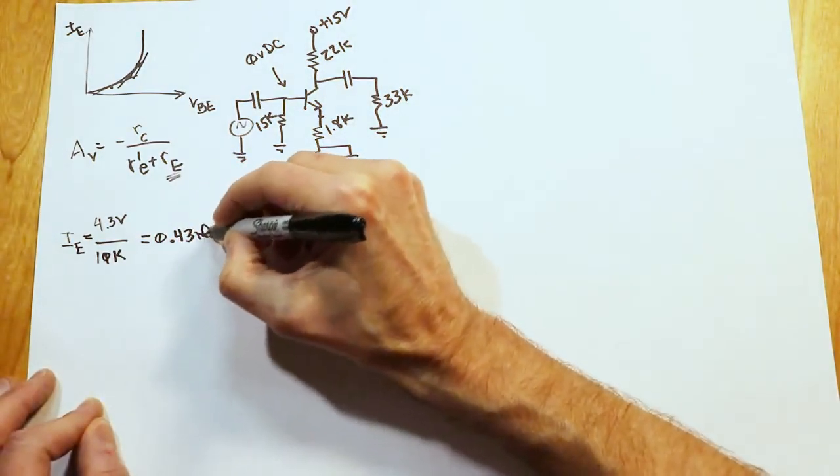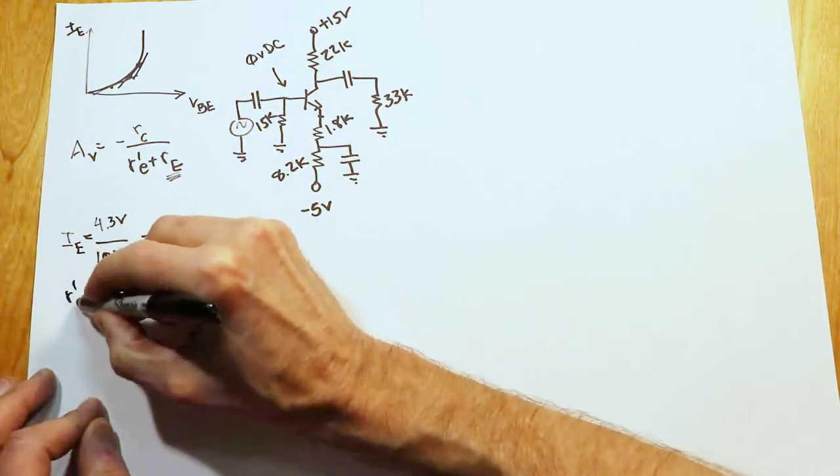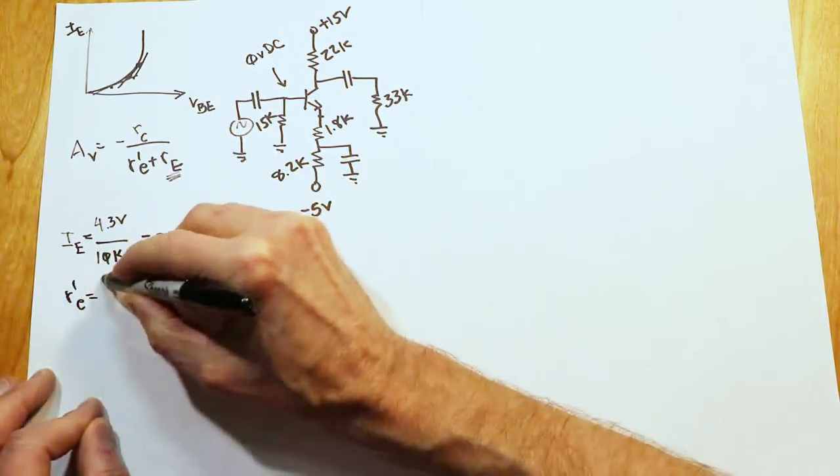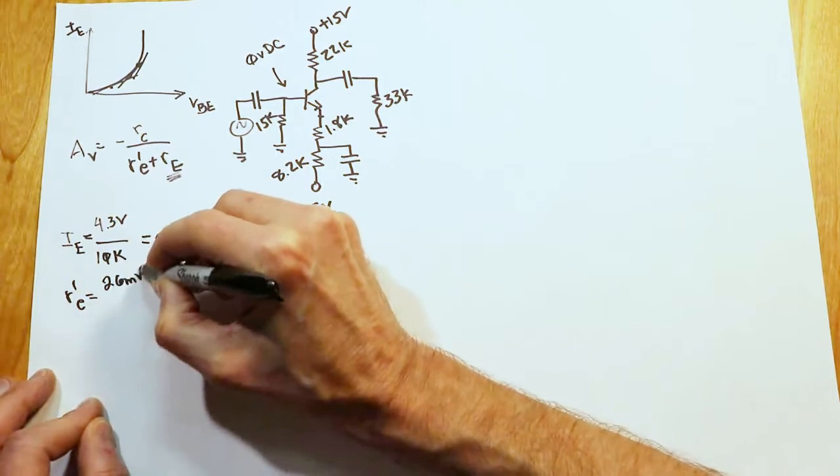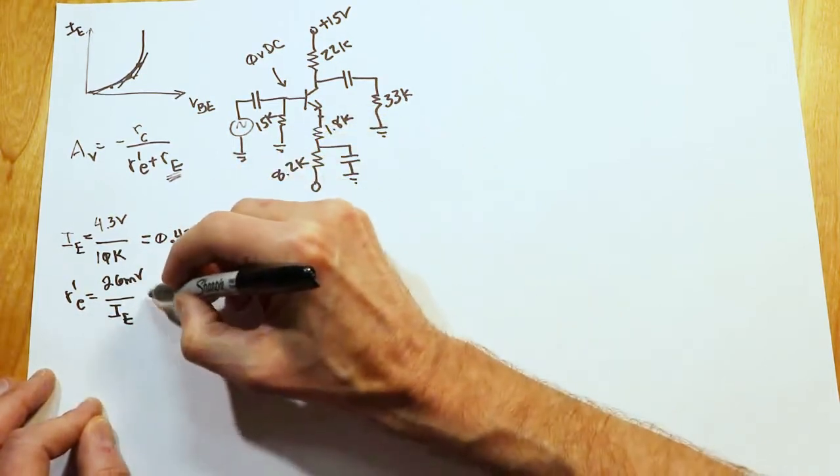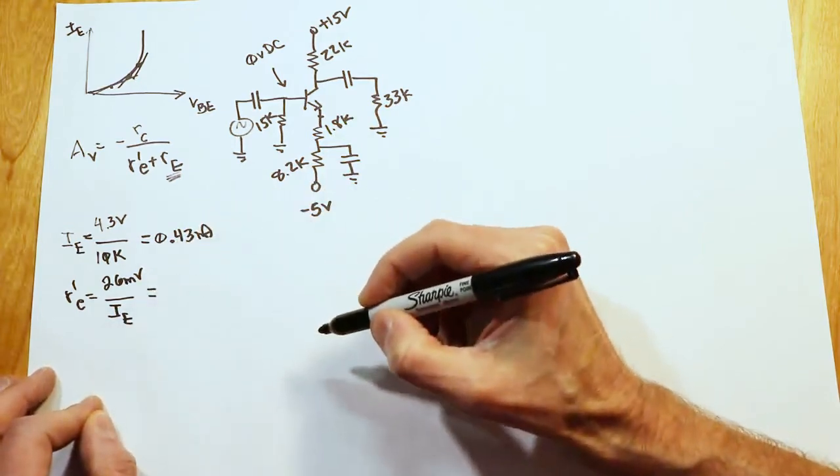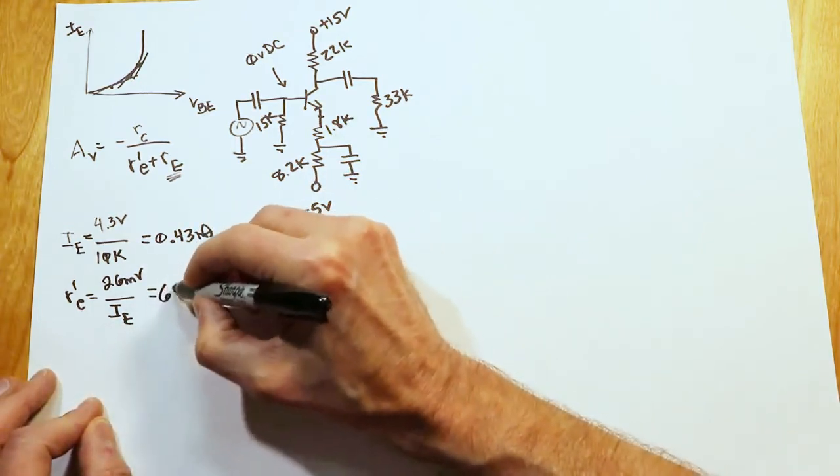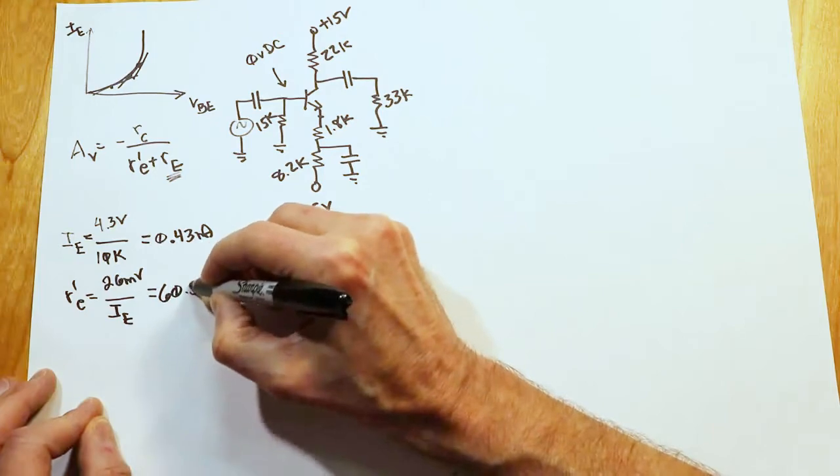And from that, we can calculate the R'e. So we determine that R'e is equal to 26 millivolts over IE. So I just put 0.43 milliamps in there, and this will work out to 60.5 ohms.